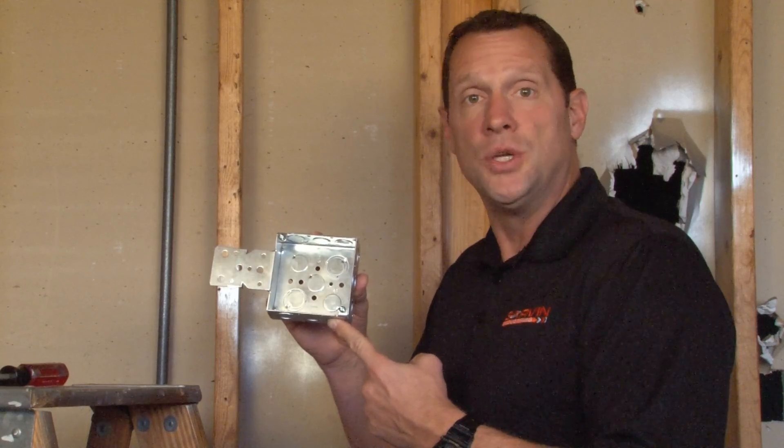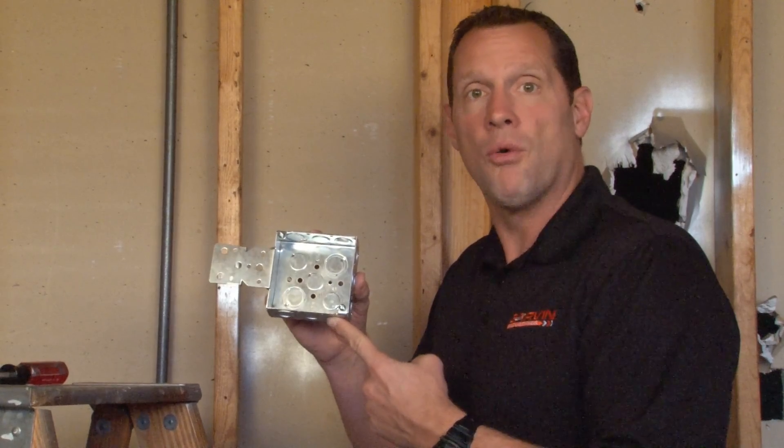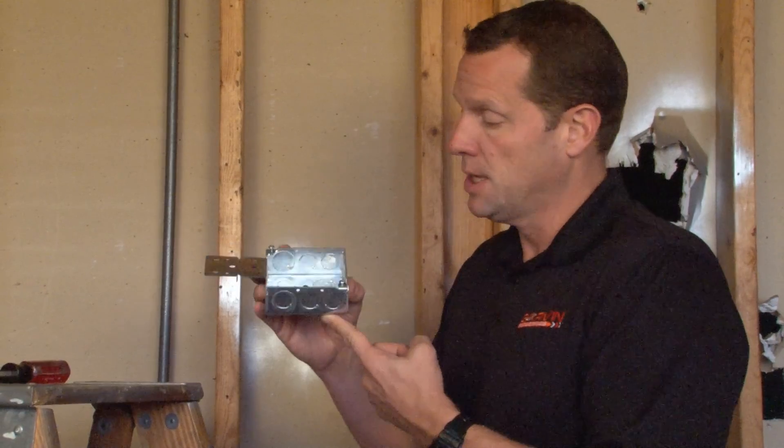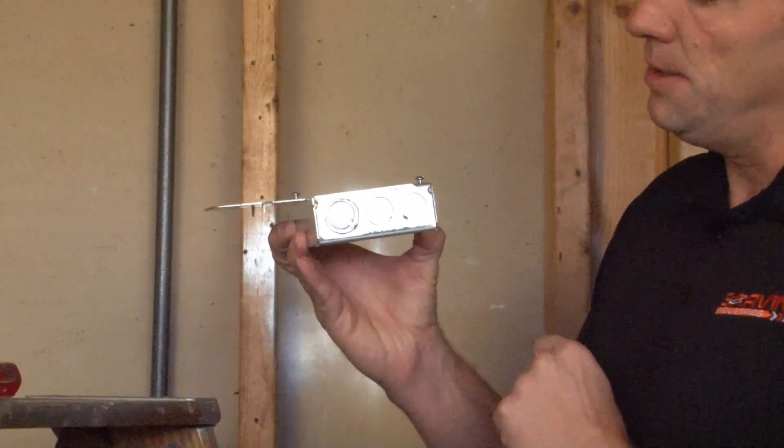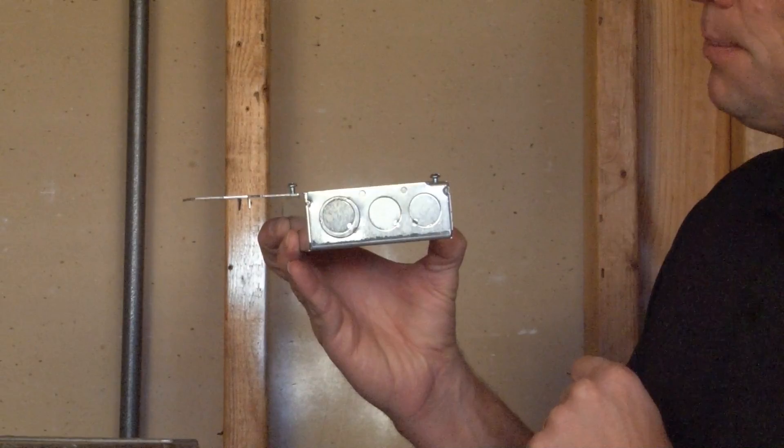Part number 52151B is a four inch square electrical junction box that's one and one half inches deep for moderate wiring capacity.